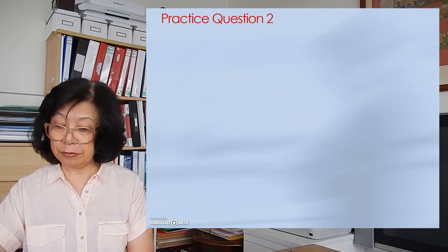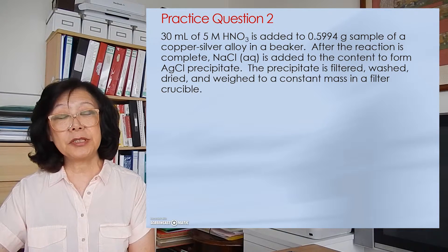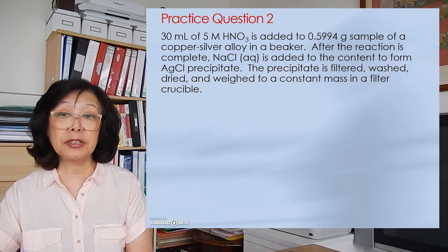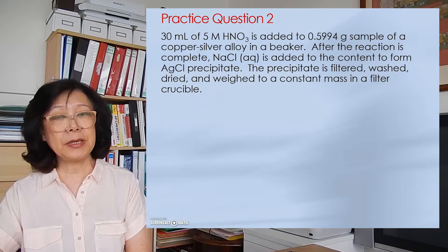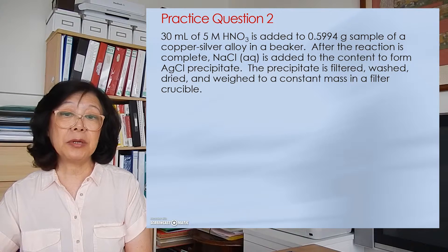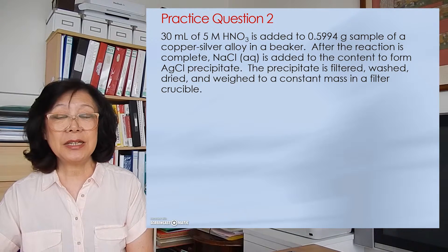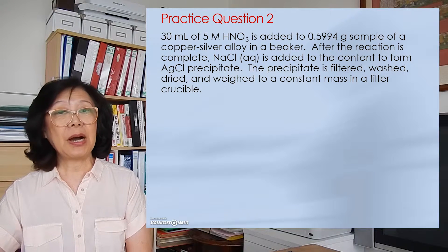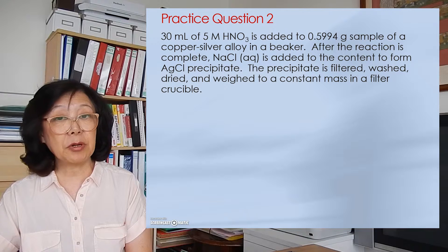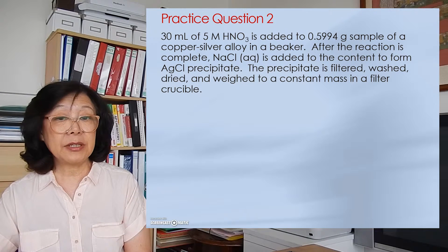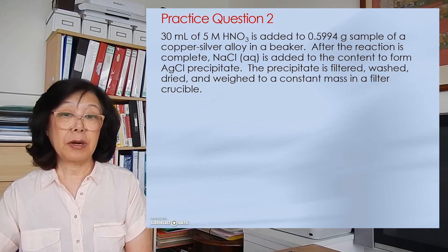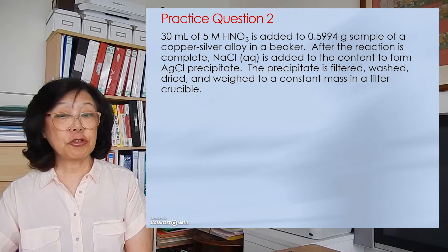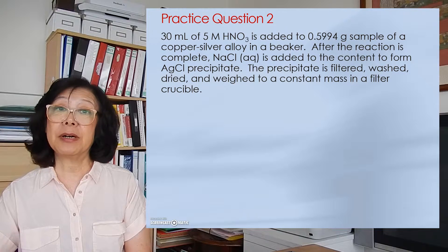Practice question number 2. I have a copper-silver alloy and I want to determine the amount of silver in the alloy. The first step is to dissolve the alloy with some nitric acid in a beaker. Let's say I have 0.5994 grams of the alloy. After the reaction is complete, I add sodium chloride solution to precipitate out silver chloride. The silver chloride precipitate is then filtered, washed, dried, and massed until I get a constant mass.